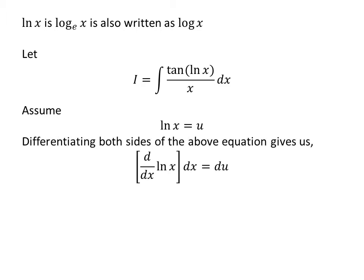Taking differential of both sides gives us derivative of natural log of x with respect to x times differential of x is equal to differential of u. We know, derivative of natural log of x is 1 upon x.